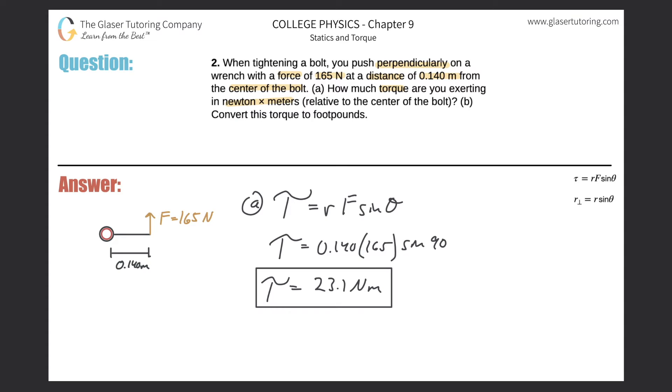That takes care of letter A. What is letter B? Convert this torque to foot-pounds. We have 23.1 newton times meter. I got to get rid of newtons and meters.